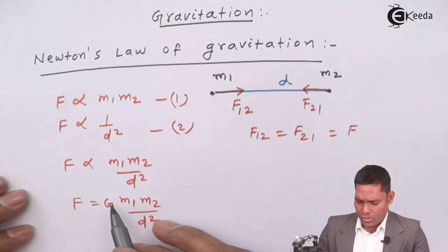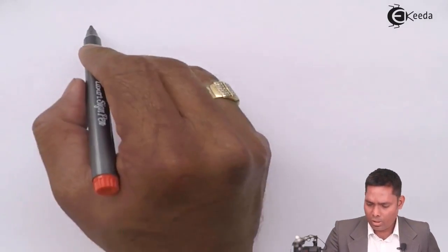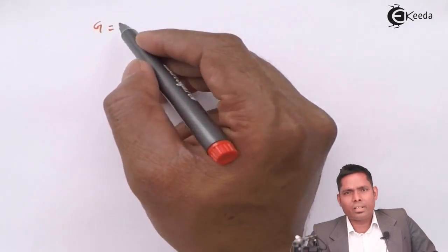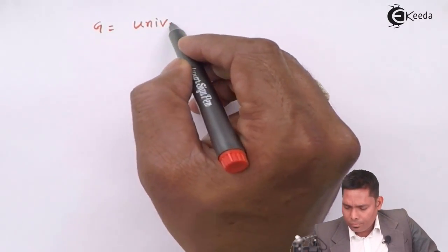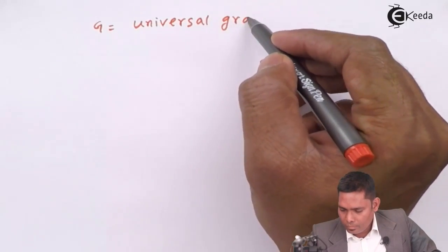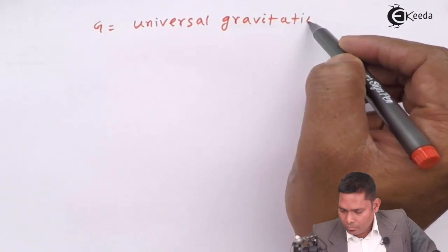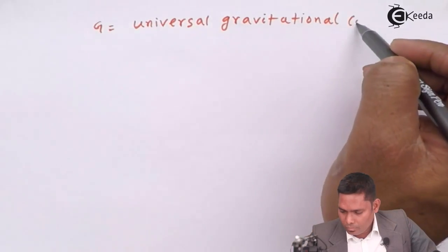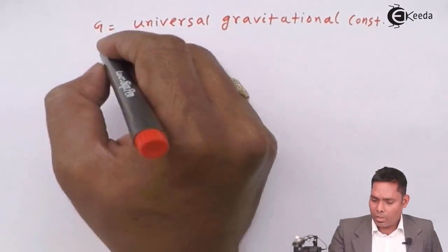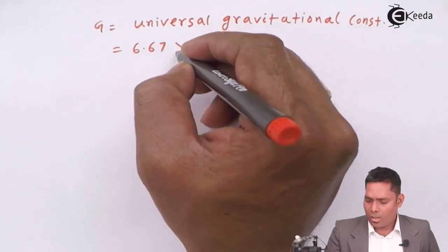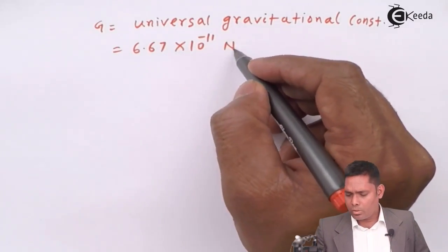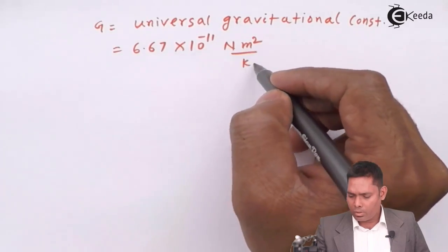Where G is known as universal gravitational constant. And its value is 6.67 times 10 to the power minus 11, and the unit is Newton meter square over kilogram square.